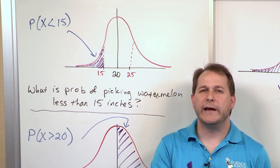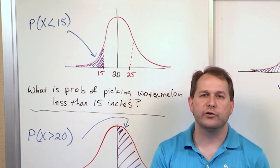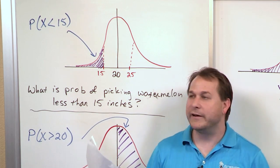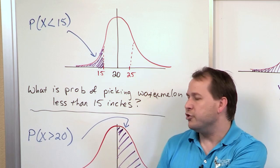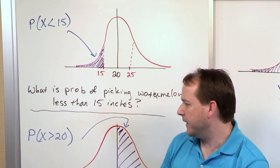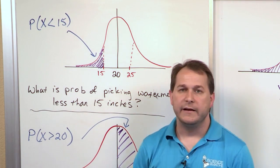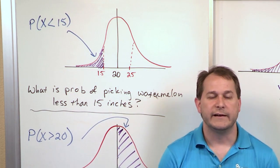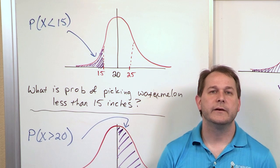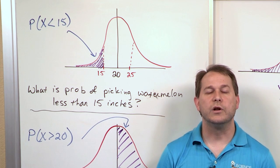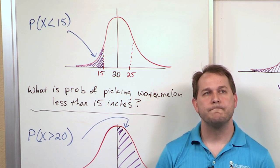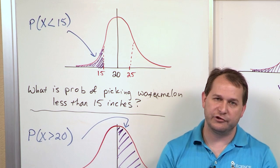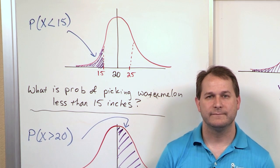So we're inching our way along. We've introduced the normal distribution, introduced some properties, talked about areas, and gotten comfortable thinking in terms of greater than or less than. In the next sections, we'll learn to use the tables to actually get real numerical answers to problems.